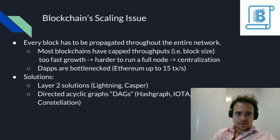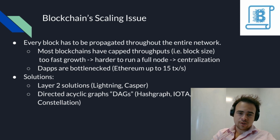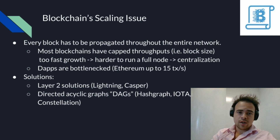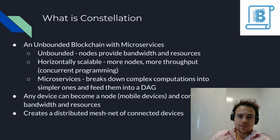There are several different approaches being taken to solve blockchain scaling issues. There are layer 2 solutions which build on top of currently existing blockchains — such as Lightning Network on Bitcoin, and Casper on Ethereum. There are also solutions that use a different kind of distributed ledger technology known as directed acyclic graphs, or DAGs. This is where IOTA, Nano, Hashgraph, and Constellation fall under.